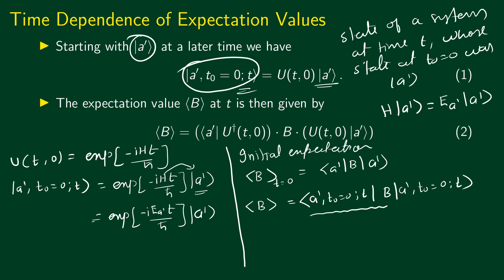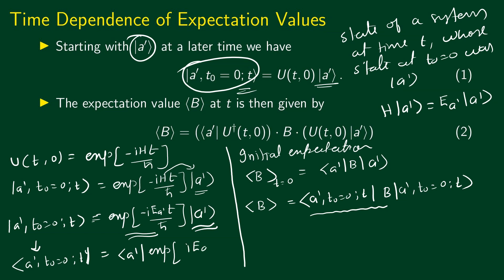We have the bra A-prime, t0=0, at time t, which is the dual of the ket. When going to the dual space, complex numbers become complex conjugates, so the minus i becomes plus i. Thus the corresponding bra is: bra A-prime times exponential plus i E_A-prime t divided by h-bar. We can now use this to calculate the expectation value of B at a later time.